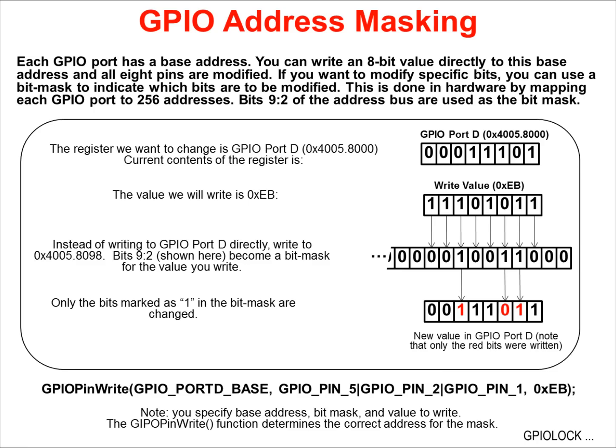GPIO address masking is a somewhat unusual technique for programming the GPIO port pins. Each GPIO port has a base address. GPIO port D has a base address of 0x4005-8000. You can write an 8-bit value to the port directly to that base address and all 8 pins of the port will be modified.